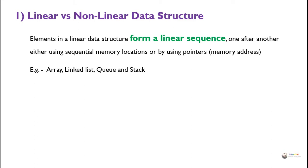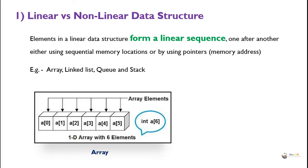Examples of linear data structures are array, linked list, queue, and stack. For example, a static array declared as int A[6] has six consecutive memory locations. Each element is accessed with the array name A and an index — the first element is A[0] and the last is A[5] — forming a sequence one after another. So array is an example of a linear data structure.